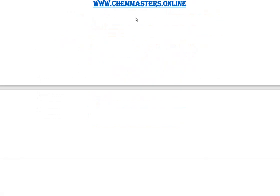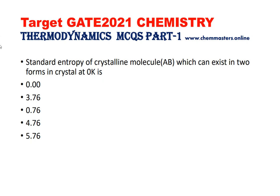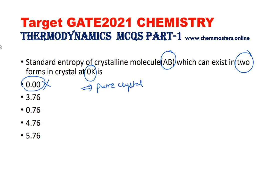Now look at the first question: the standard entropy of crystalline molecule AB, which can exist in two forms in a crystal at zero Kelvin. Most aspirants choose the first option — that it is zero — which is absolutely wrong. We know that the standard entropy of a pure crystal at zero Kelvin equals zero, but the given crystalline molecule AB exists in two different forms, so it is not a pure crystal — it is an impure crystal.